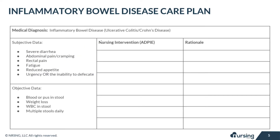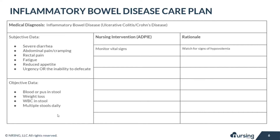For the patient's objective data, we're going to probably see some blood or even pus in the stool. The patient might experience weight loss if they've been having a lot of diarrhea or are unable to eat. They might also have white blood cells in the stool, and they might be having multiple stools daily.